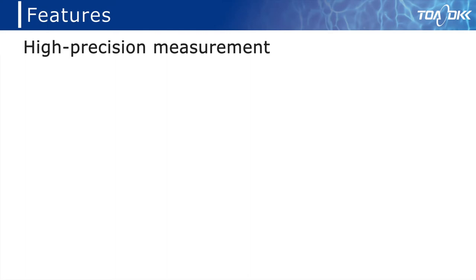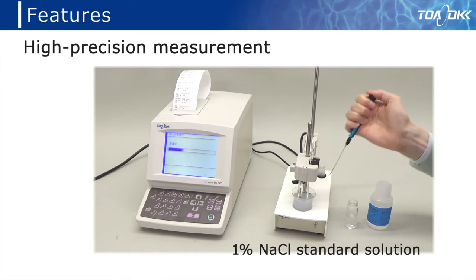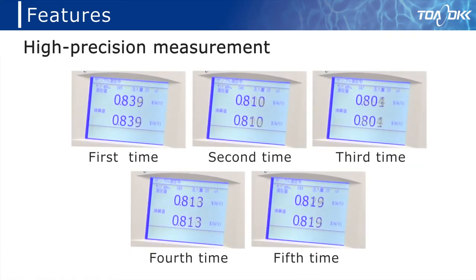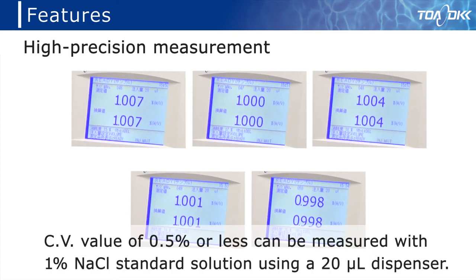The third feature is high precision measurement. Here is an example of measuring 1% NaCl standard solution. The video shows five consecutive measurements. It is possible to achieve a CV value of 0.5% or less with 1% NaCl standard solution using a 20µL dispenser.